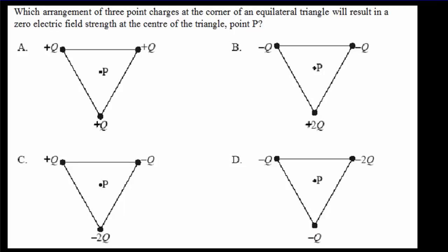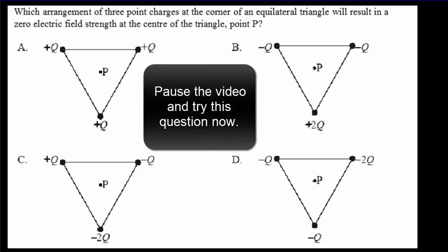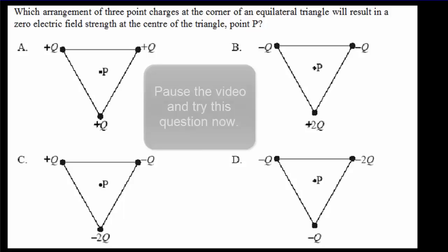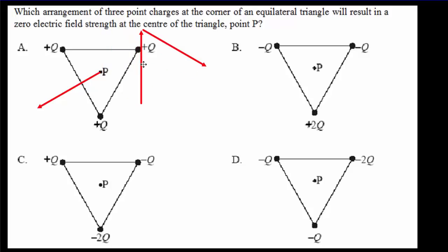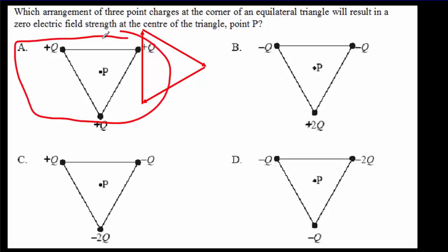Here's another similar IB multiple choice question — pause the video, try it, and come back. We have three equal positive charges. Each one pushes the positive test charge away, giving three electric fields in their respective directions. When you add those three vectors, you get zero. That means the electric field at P is zero, so the correct answer is A.